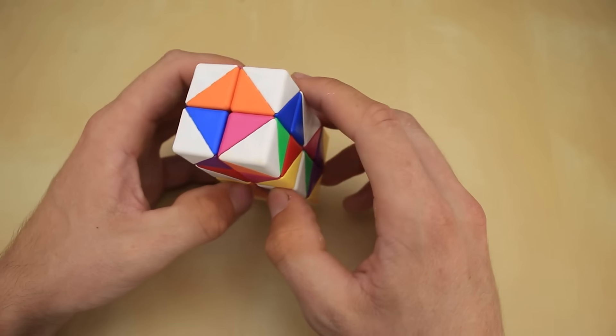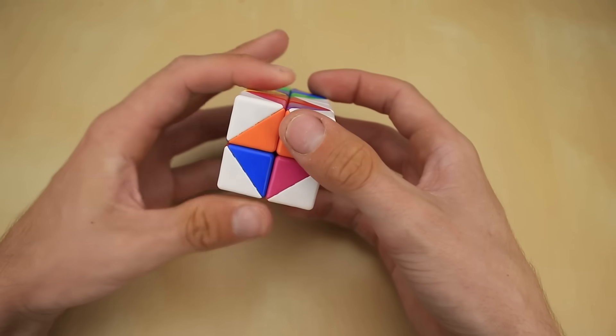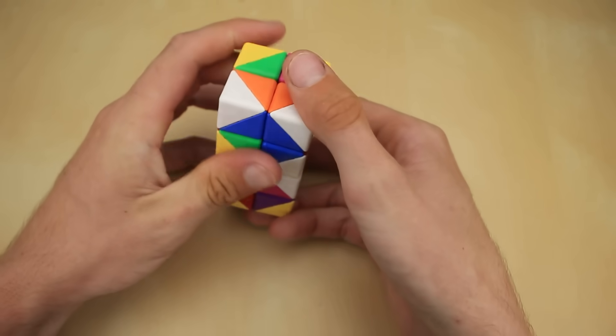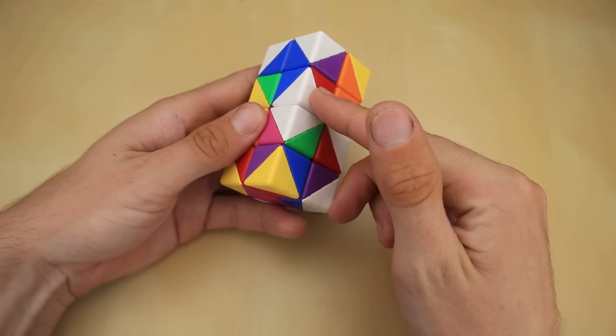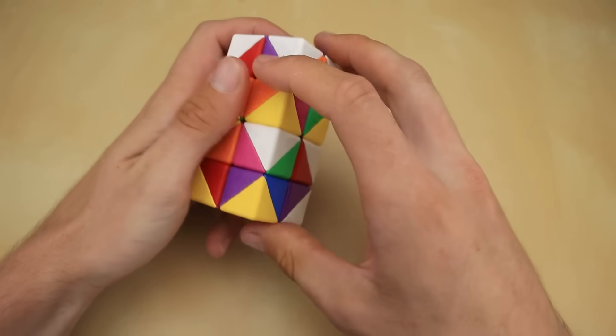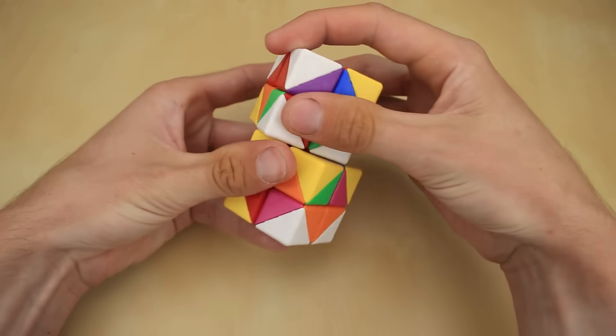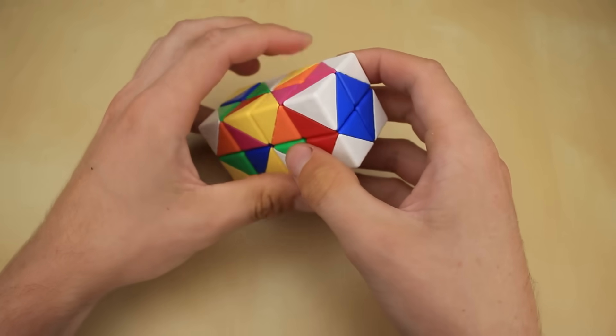So this is the part where you stare at the puzzle for a while until you finally find two pieces that go together, and we can pair them up like this pretty intuitively. Then once you find another two that go next to there, you again intuitively pair them up like this, and then we can match everything up, and there we go. There's our first layer.